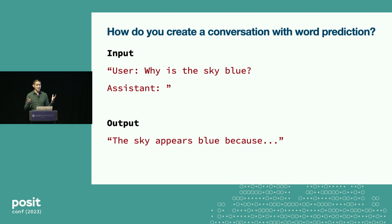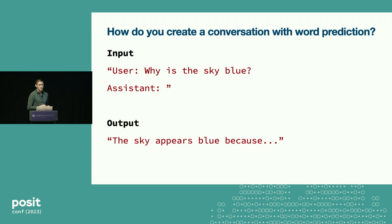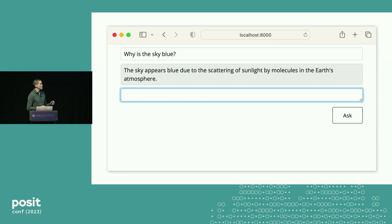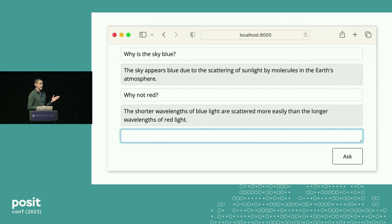This sort of chat interface has been really enormously successful — we all know about ChatGPT. I did some work earlier this year on a Python package called ChatStream, which you can use to make AI chat apps with Shiny. So I'm going to show you a really basic app made with this. It's basically like ChatGPT — you can type in your question, "why is the sky blue?", and it gives you an answer. It does that by talking to the OpenAI API.